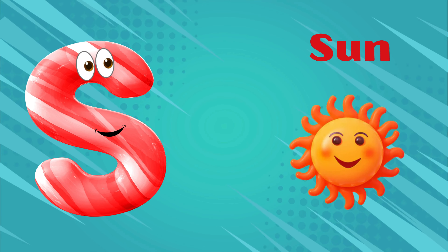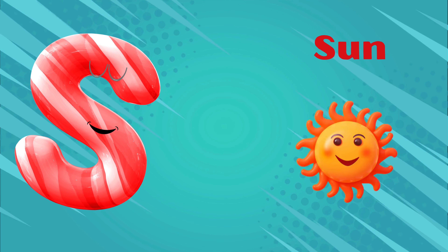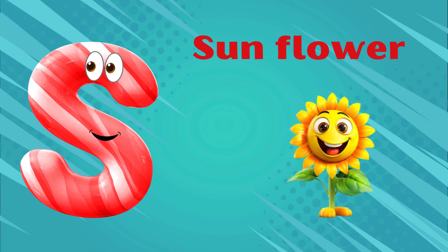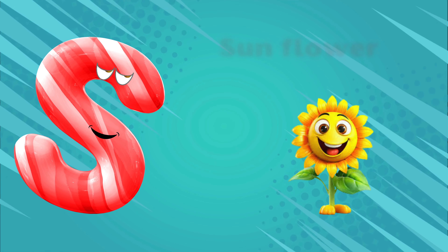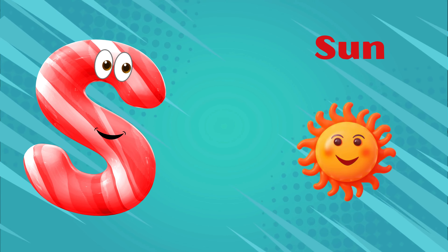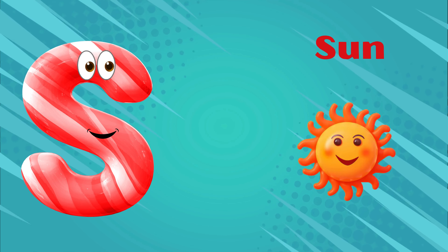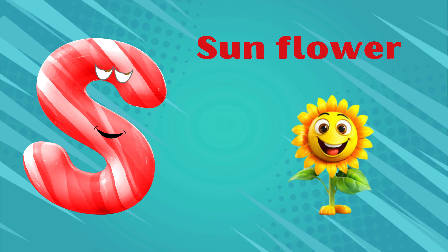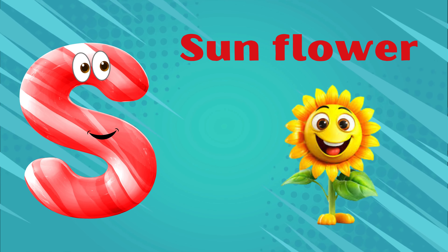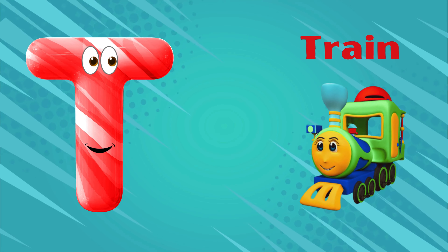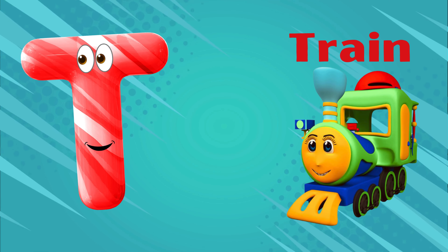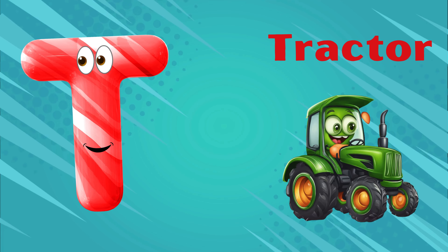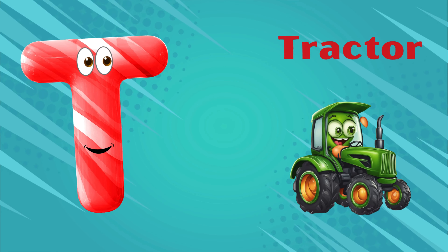S is for sun, sa-sa-sun. S is for sunflower, sa-sa-sunflower. S is for sa-sa-sa-sun. T is for train, ta-ta-train. T is for tractor, ta-ta-tractor.